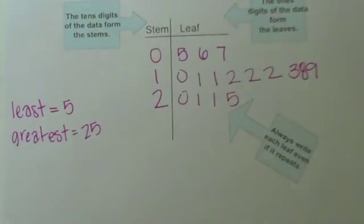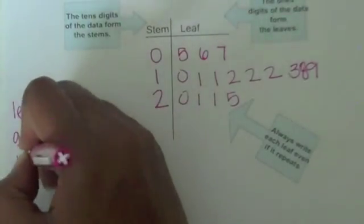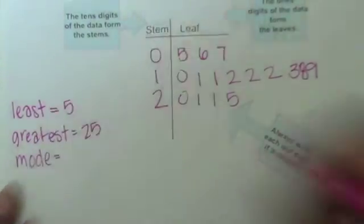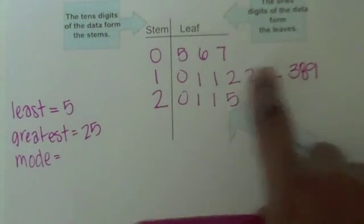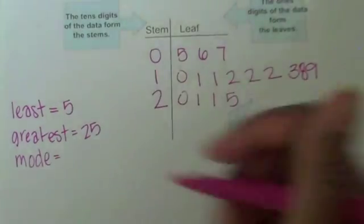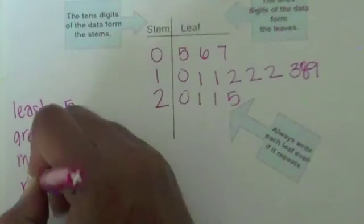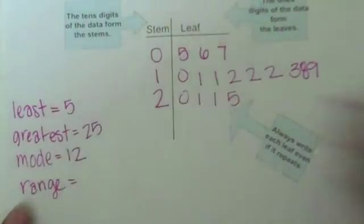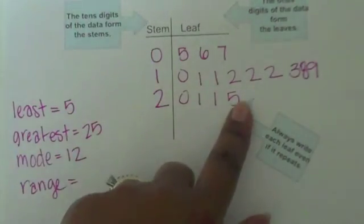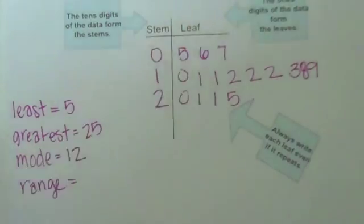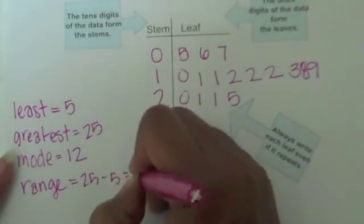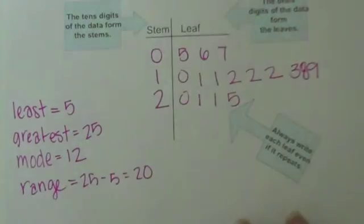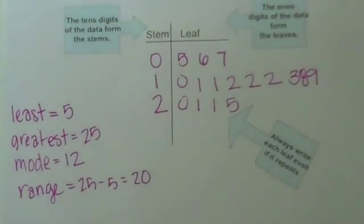It's also very easy to see the mode. Which one occurs most often? I see three 2s next to stem 1, meaning 12 is the mode — you combine the stem 1 with the leaf 2 to make 12. I can also easily find the range: greatest 25 minus least 5 gives a range of 20. Those are just a few useful ways to use a stem and leaf plot.